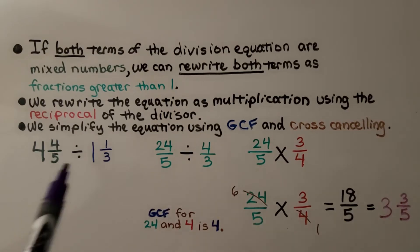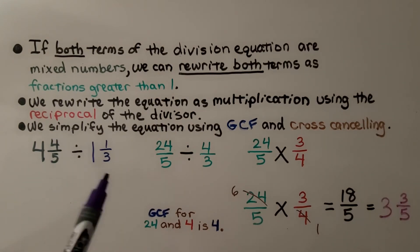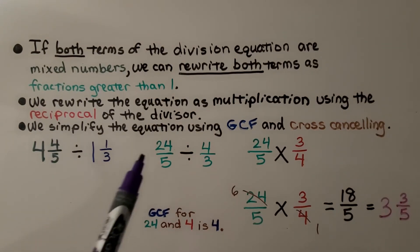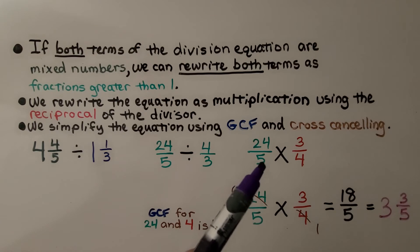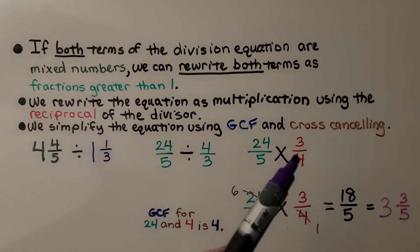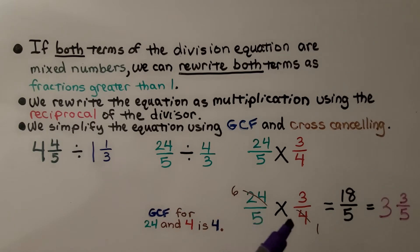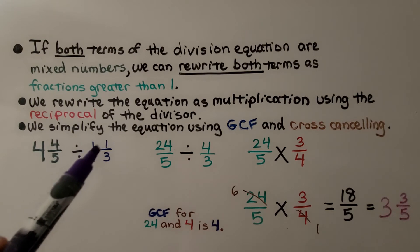If both terms of the division equation are mixed numbers, we can rewrite both terms as fractions greater than 1. We rewrite the equation as multiplication using the reciprocal of the divisor, and we simplify using GCF and cross-canceling. So we have 4⅘ divided by 1⅓.